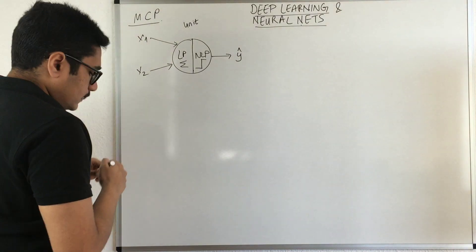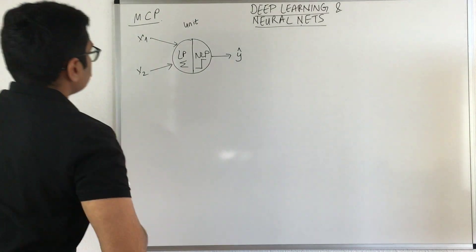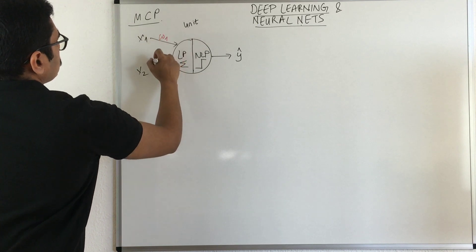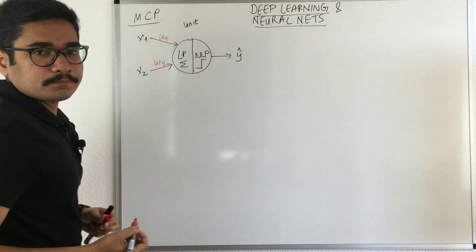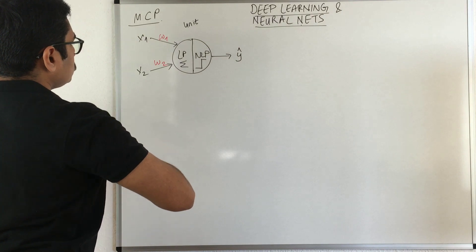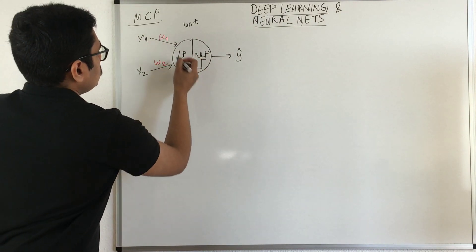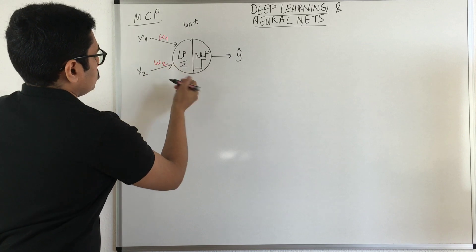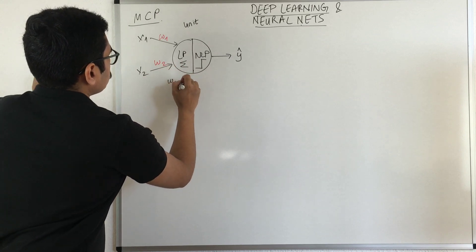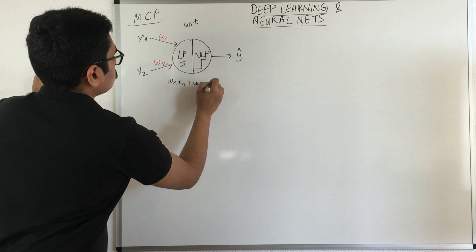These coefficients are essentially called weights. When you put into this system, it will produce the multiplication: W1 X1 plus W2 X2.